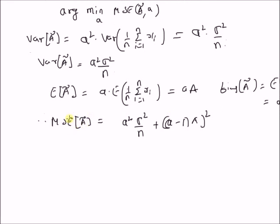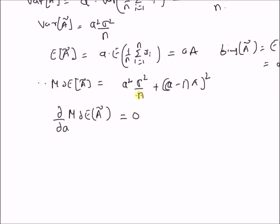We can determine the value of a by minimizing this mean square error of ã. We equate the derivative of the mean square error with respect to a equal to 0. The derivative is 2aσ²/n + 2(a - 1) × a² = 0.